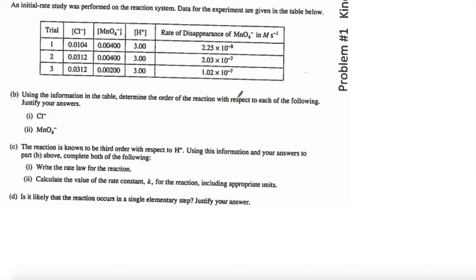Now, an initial rate study was performed on the reaction system. Data for the experiment are given in the table below. Using the information in the table, determine the order of the reaction with respect to each of the following. Justify your answer. So I'm looking for a reaction where chloride changes, and permanganate does not change. Permanganate does not change from experiment 1 and 2. So I'm going to use experiment 1 and 2 to answer B(i). What I see is when permanganate stays constant, and of course the hydrogen ion does as well, my concentration of chloride is times 3.